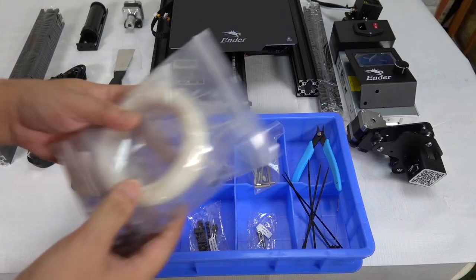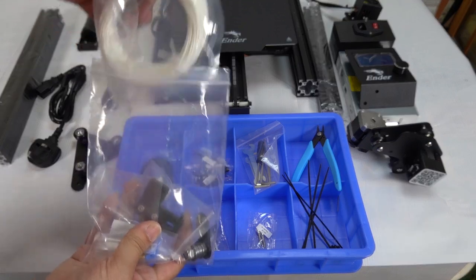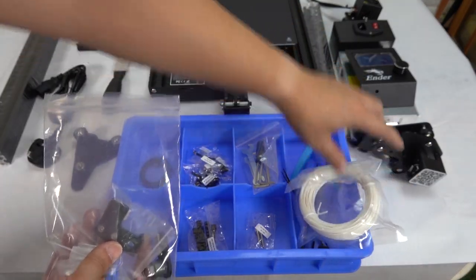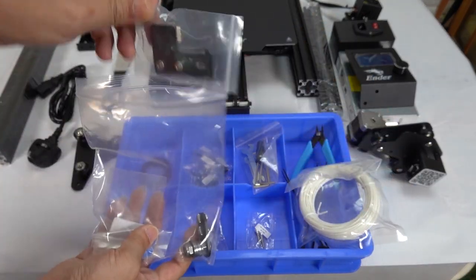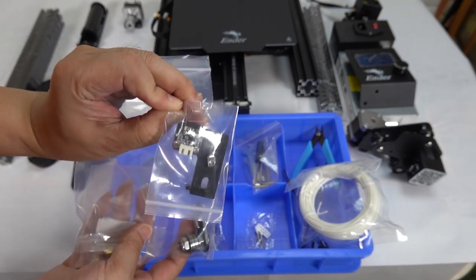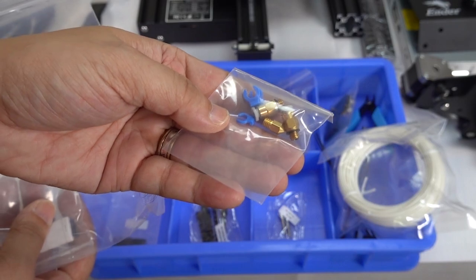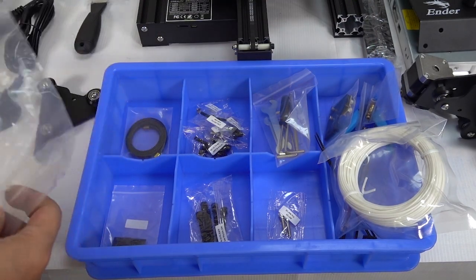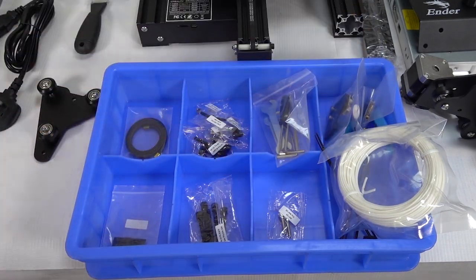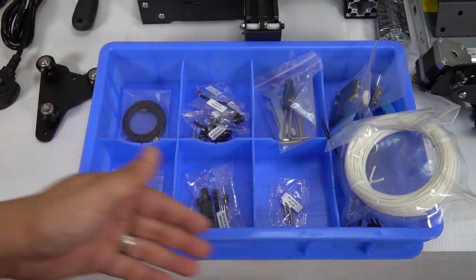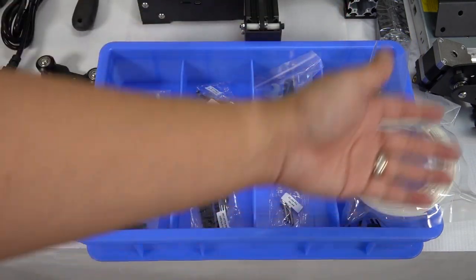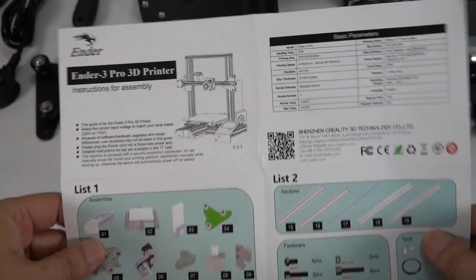The second bag contains things that are not commonly used. For example, the PLA consumables, a limit device, spare nozzles and connectors, and there is also a USB drive with SD card. After being sorted into categories, common things on the left, the right is not commonly used.